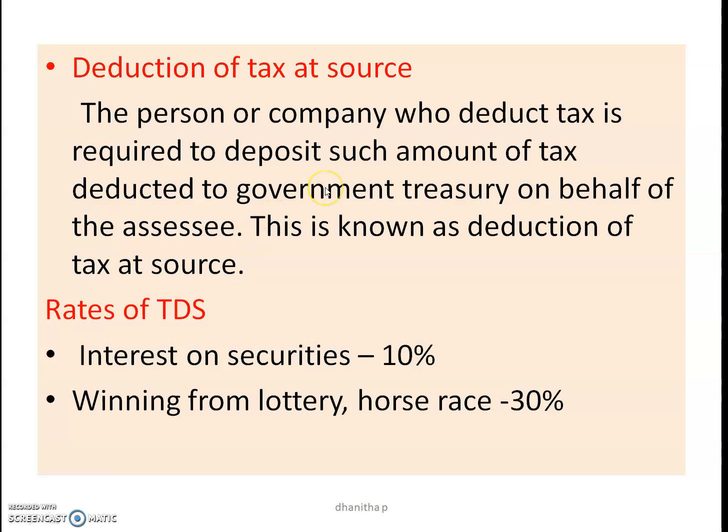For example, in the case of lottery winnings, the company paying the lottery winning amount will deduct the tax and deposit it to the government treasury on behalf of the assessee. This is known as deduction of tax at a source.